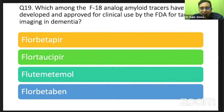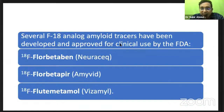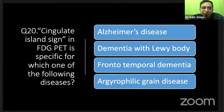Regarding newer imaging techniques for Alzheimer's disease and other dementias, not many imaging findings are available. The cingulate island sign on FDG PET has been discussed before and is repeatedly asked. It is used in clinical practice to differentiate dementia with Lewy body from Alzheimer's disease.